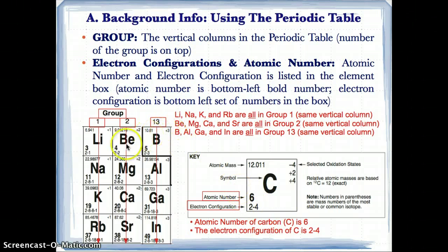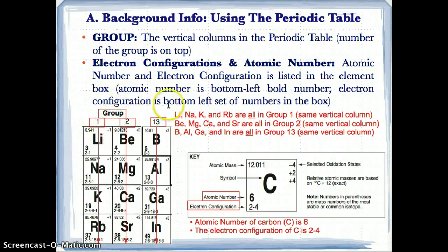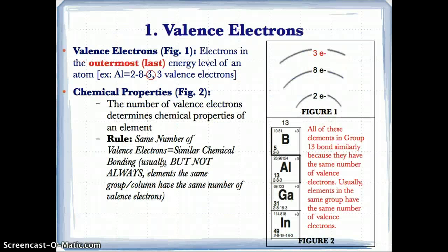To review, Li, Na, K, and Rb all belong to group 1 because they're in the same vertical column with the number 1 on top. Be, Mg, Ca, and Sr are all in group 2 because they're in the same vertical column with the number 2 on top. And B, Al, Ga, and In are in group 13 because they're in the same vertical column with the number 13 on top. The group number depends on what number is on top; as long as they're in the same vertical column, they're in the same group.